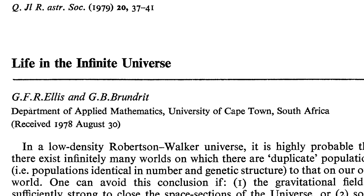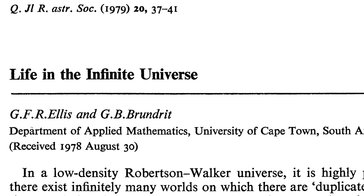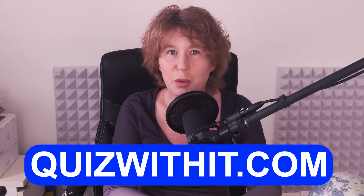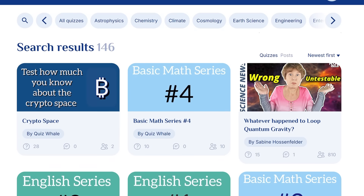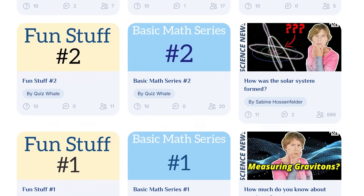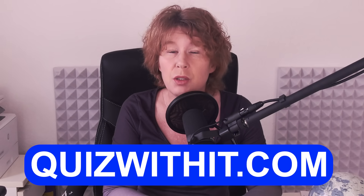It's not a new insight. To my best knowledge, it was first discussed by George Ellis and Graham Brundritt in 1979. George Ellis, by the way, is one of the people I interviewed about the multiverse for my first book. That an infinitely extended universe would have infinitely many copies of each of us is often considered the simplest and least controversial type of multiverse. This video also comes with a quiz on Quiz With It to help you remember what we talked about — my team and I developed this website ourselves, and you can now also create your own quizzes there using AI.